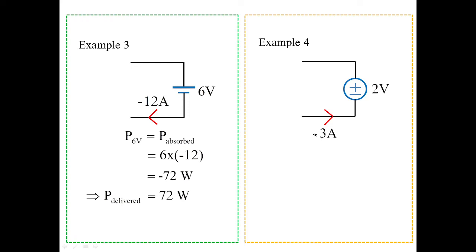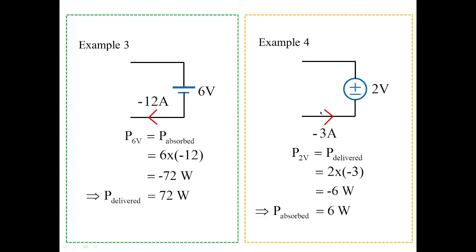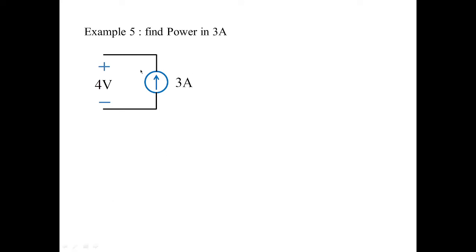In example 4, minus 3 amperes comes to the negative terminal of the source voltage. The power developed here is a delivered power whose value is minus 6 watts, so power absorbed = positive 6 watts. In example 5, we need to find out the power in the 3-ampere current element; the power delivered value is 12 watts. These are the basics of power absorbed and power delivered, as seen from examples 1 to 5.